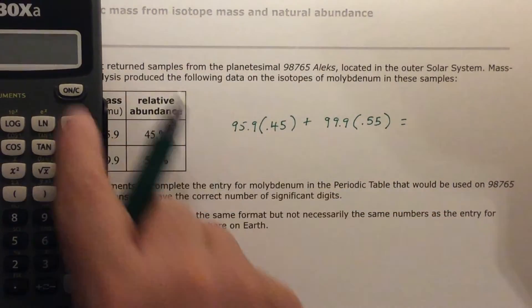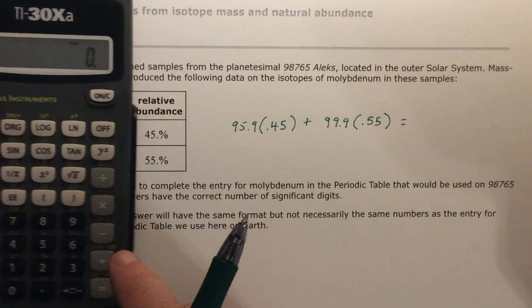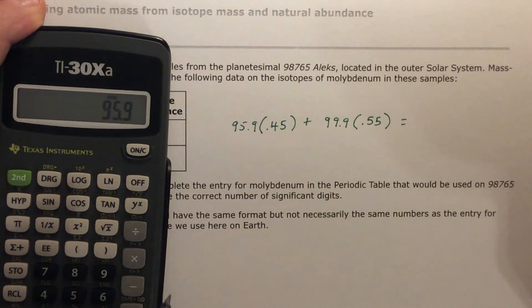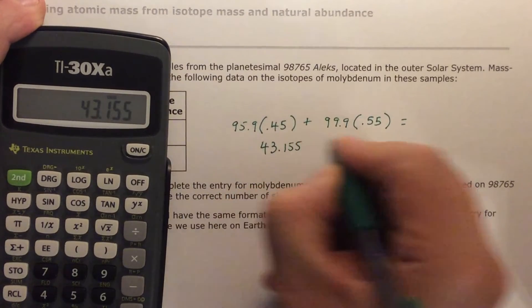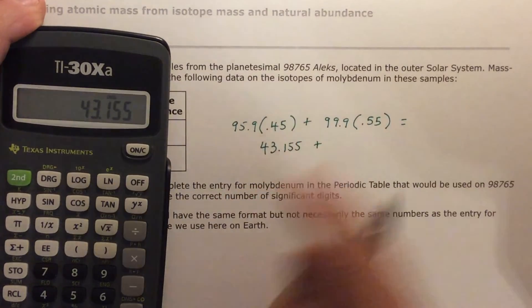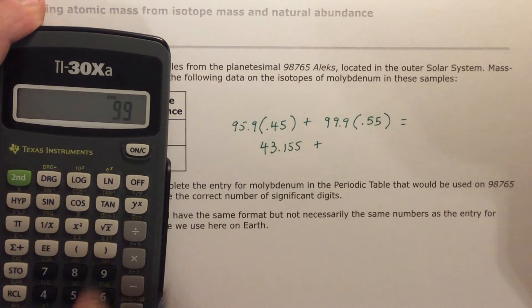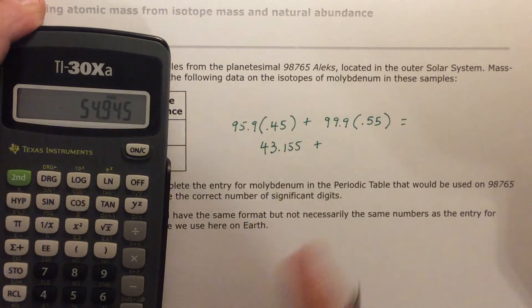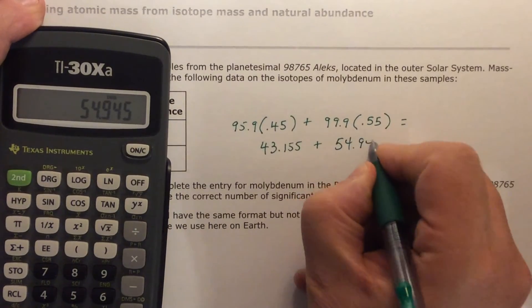So let's see what we got. We have 95.9 times 0.45 — that's 43.155 — plus 99.9 times 0.55, which gives me 54.945.